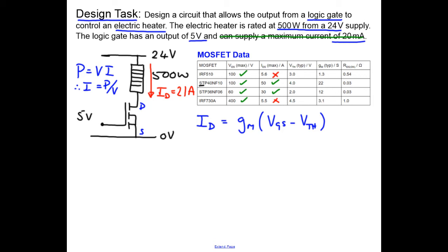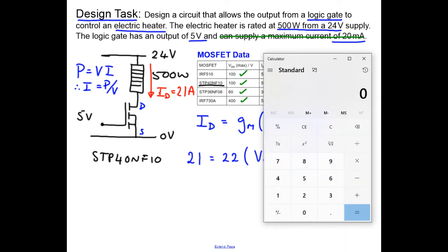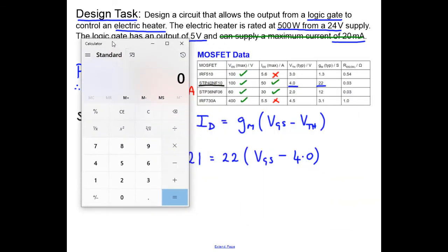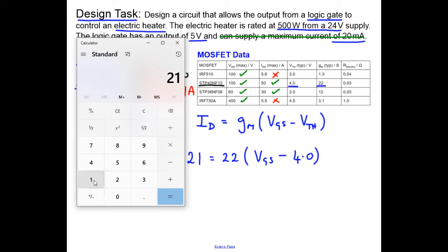So if we start off with the STP40NF10 and we'll apply our equation to that MOSFET. So we have our drain current is 21 amps, our transconductance is 22, our gate source voltage is what we're trying to calculate to see whether or not we have the suitable circuit to use this MOSFET, and the threshold voltage is 4.0 volts. So we need to solve this equation to find VGS. We do 21 divided by 22 and then we add on the 4 volts, and that means that we need 4.95 volts.